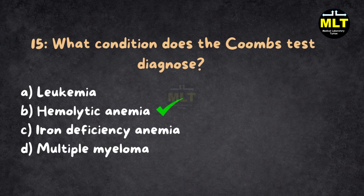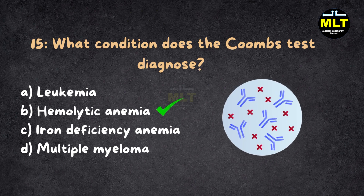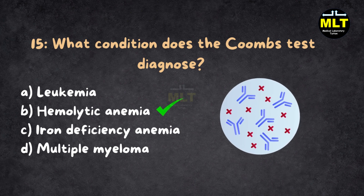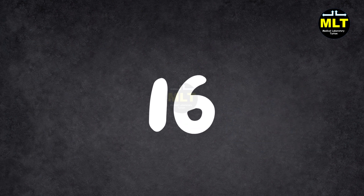Correct answer: B. Hemolytic anemia. Explanation: The Coombs test detects antibodies against RBCs, aiding in diagnosing autoimmune hemolytic anemia.